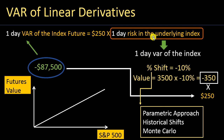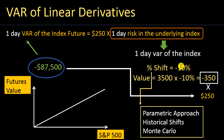Once you calculate the one-day VAR of the index, you simply multiply that by the sensitivity or delta of the derivative with respect to the underlying risk factor, and that gives you the value at risk of the linear derivative. To summarize: to calculate the VAR of a linear derivative, multiply the delta by the VAR of the underlying risk factor. In this case the VAR of the underlying risk factor is 350 points (10%), and the underlying risk factor is the S&P 500 index itself. You can use a parametric approach, historical simulation, or Monte Carlo simulation to get the VAR of the underlying index.